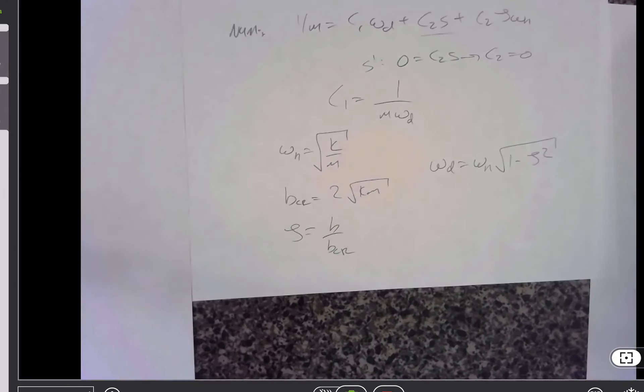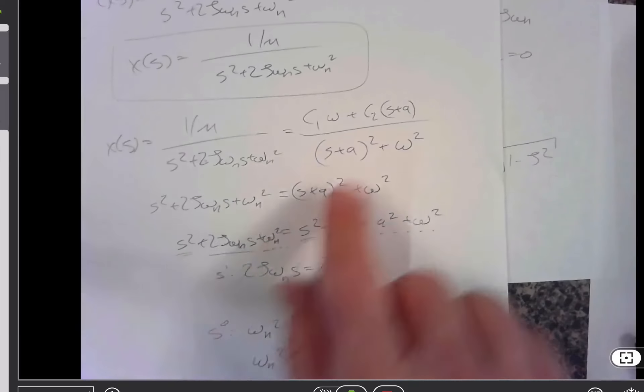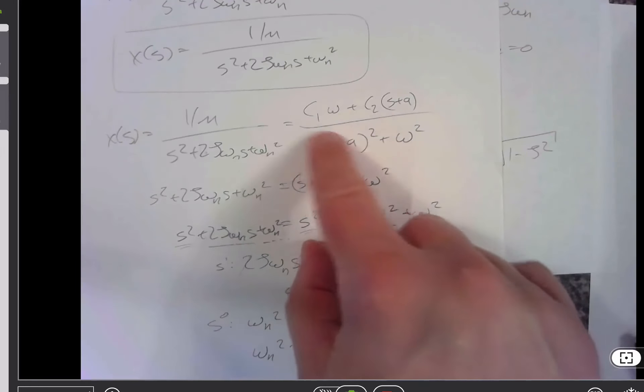So I will let you do the final inverse Laplace step from there, but if you know c1 and you know c2 is equal to 0, this is pretty straightforward.